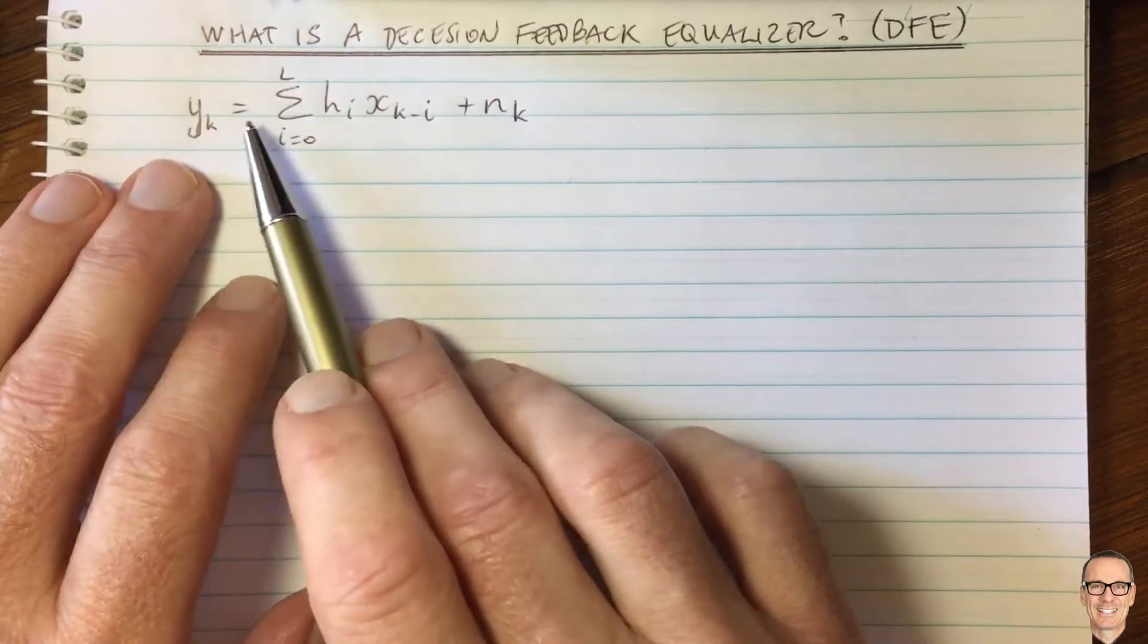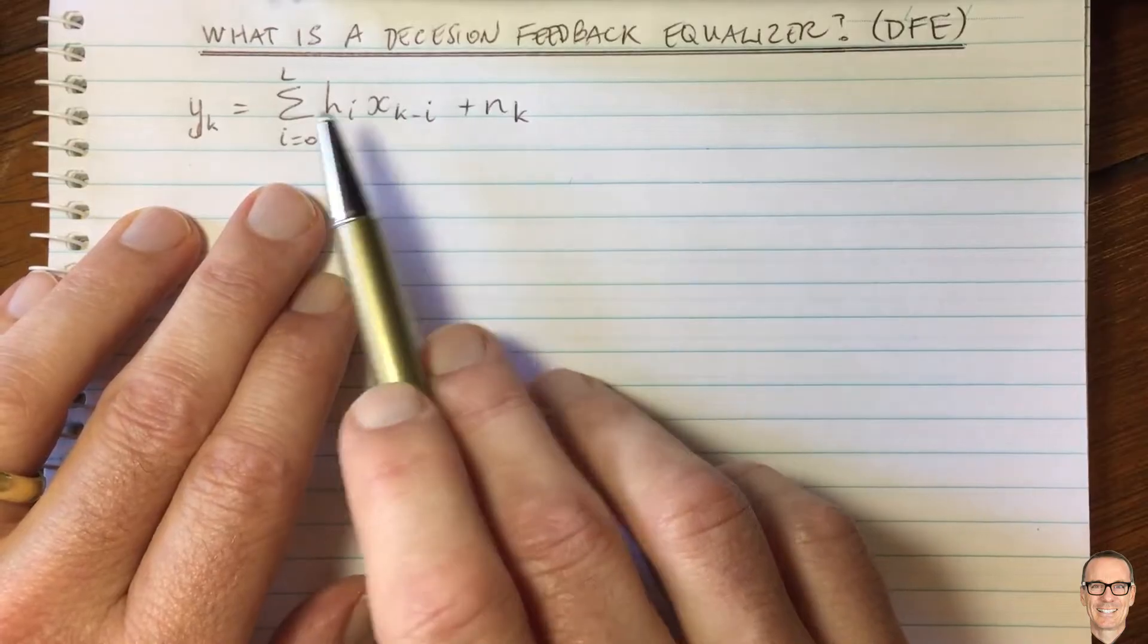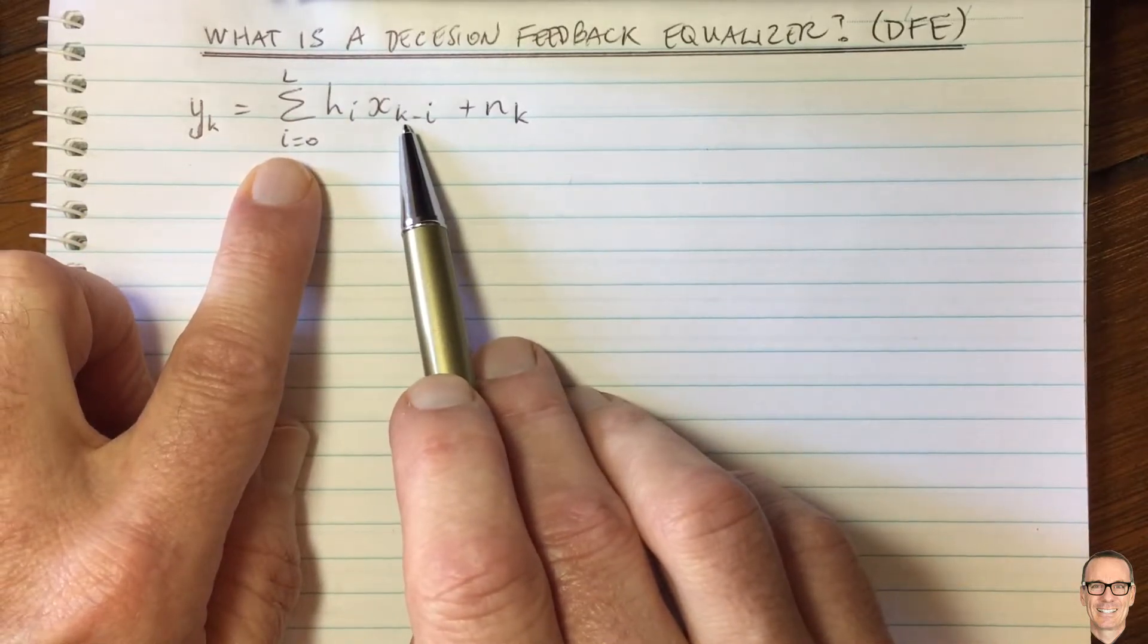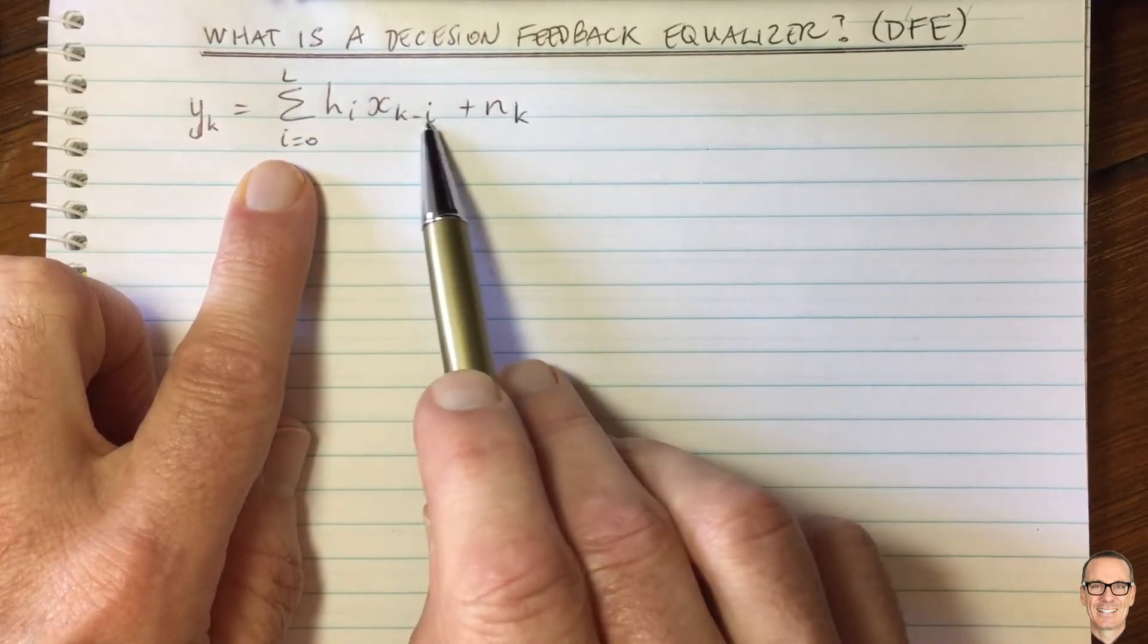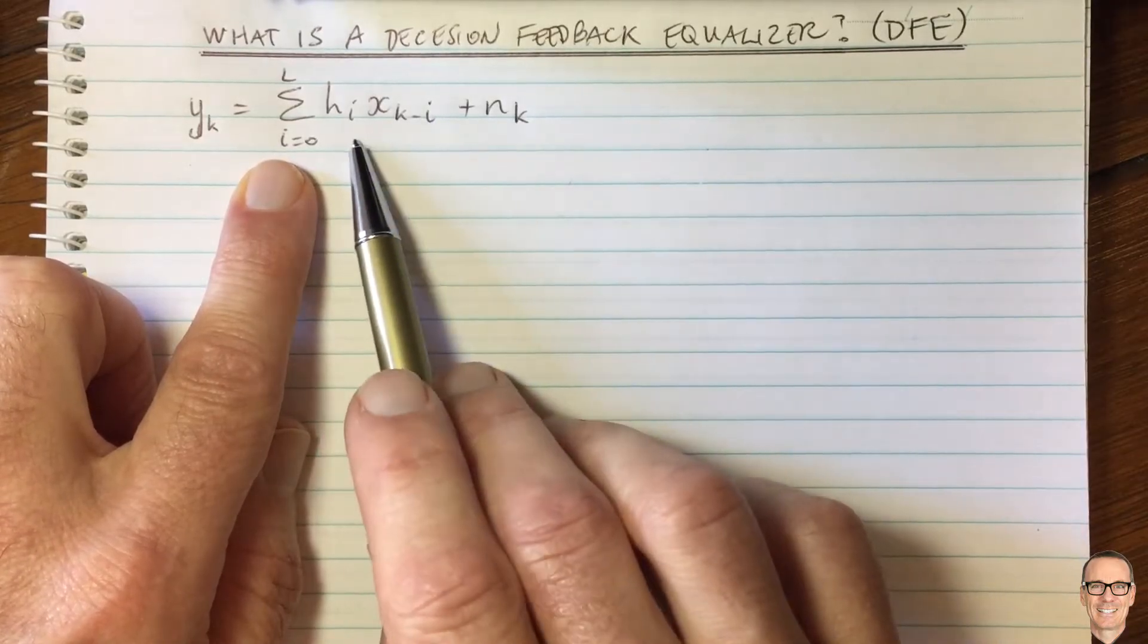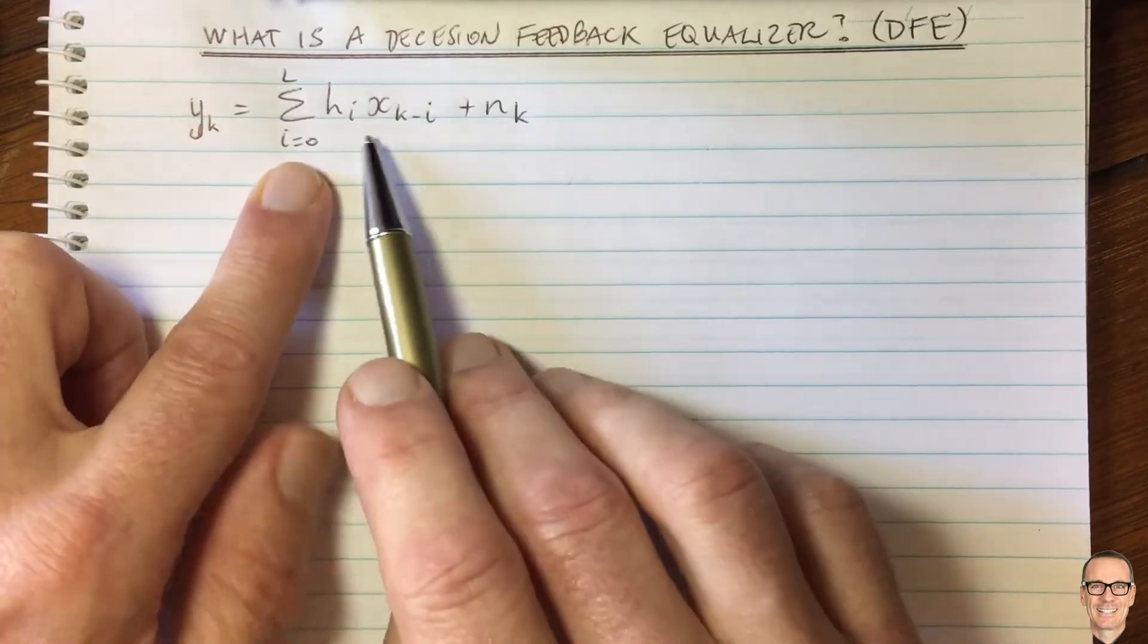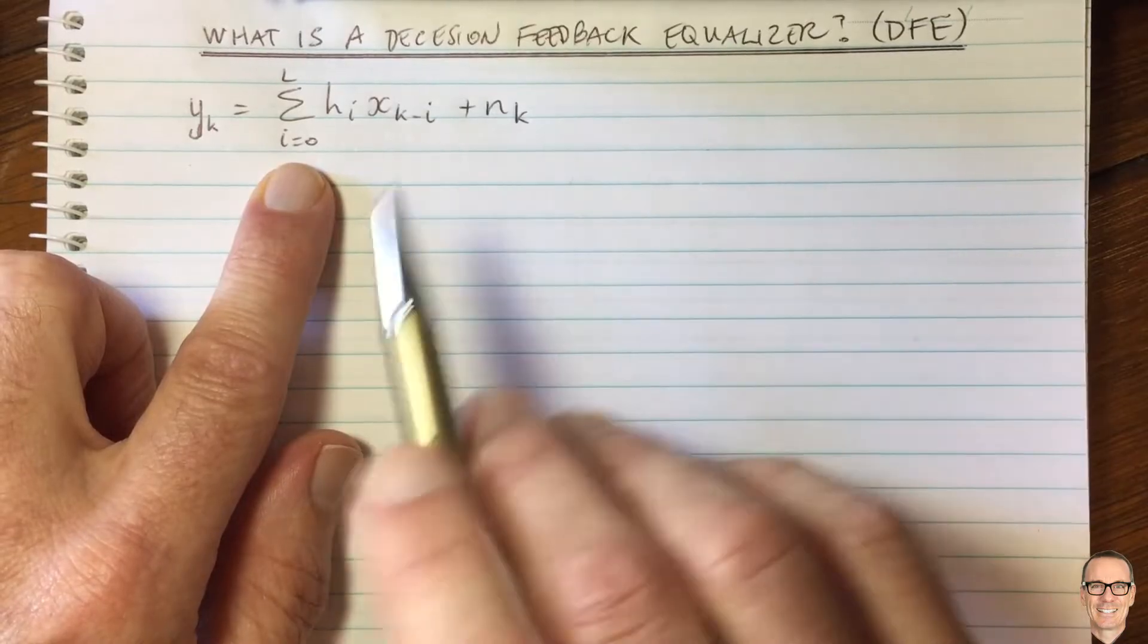But we've got a measurement at time k which is equal to a summation of input symbols from previous time. So we've got the for i equals zero element of this summation we've got x of k. So that's at the same time as the measurement. But then for the other elements of the sum we've got x of k minus one and k minus two and so on for all the different inter-symbol interference components. And they're all being measured at time k because the channel is frequency selective and that's what causes the inter-symbol interference. Like I say more details of that in the other video plus the Gaussian noise.